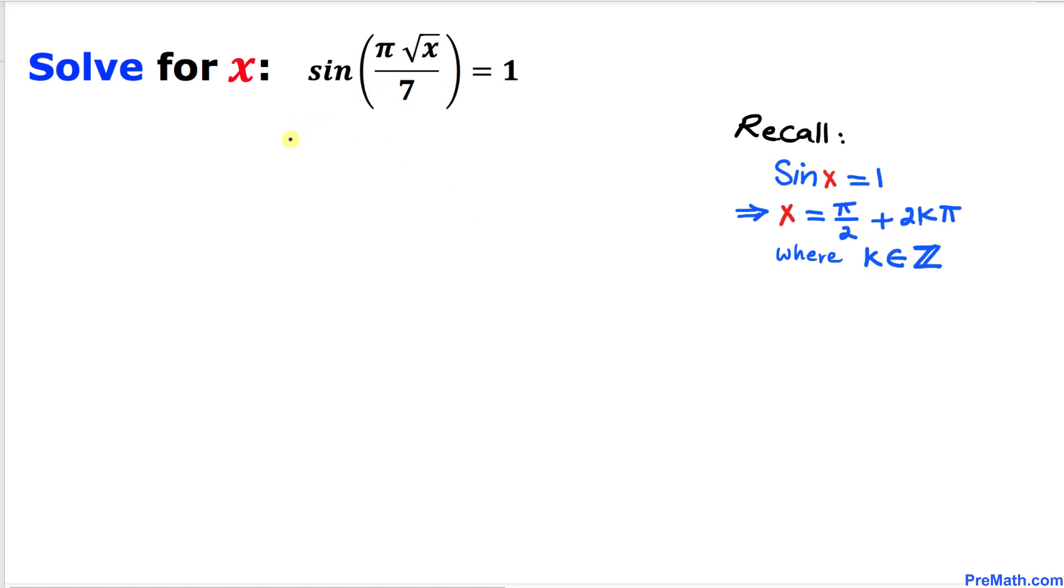Therefore, our given function could be written as pi square root of x divided by 7 equals pi over 2 plus 2k pi.